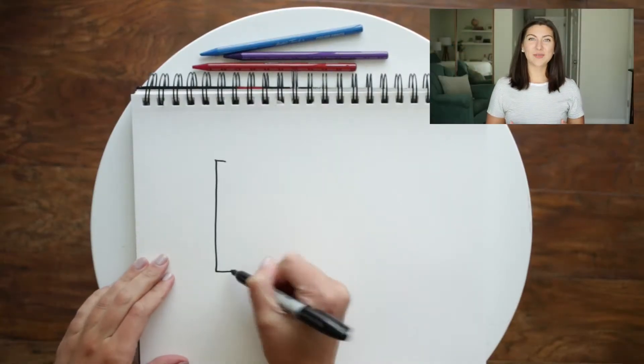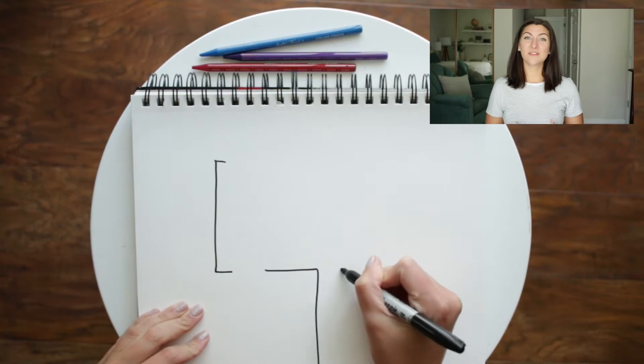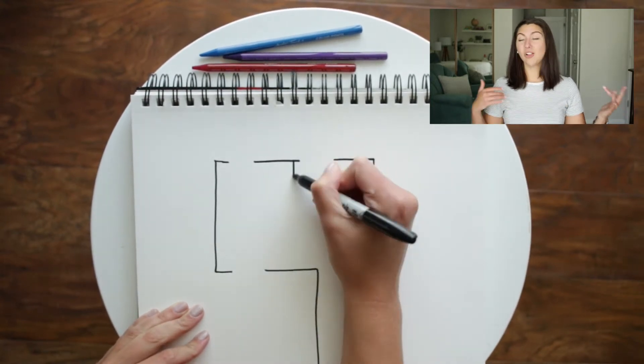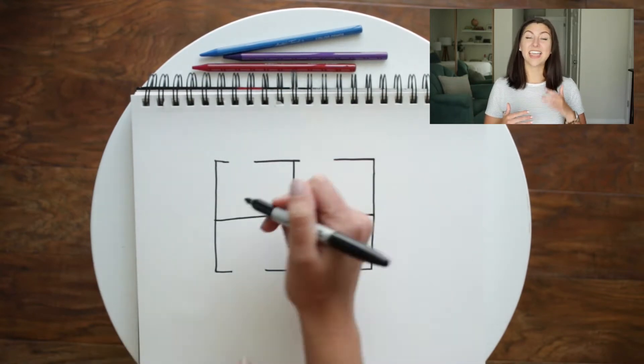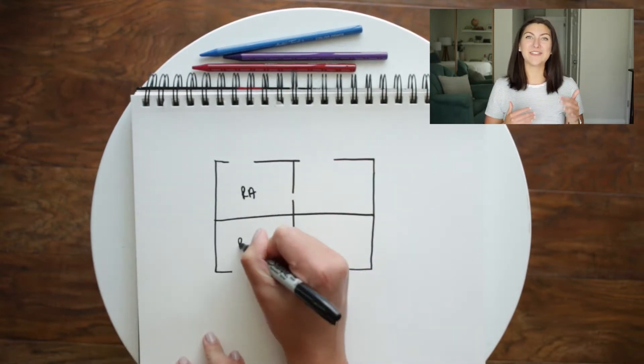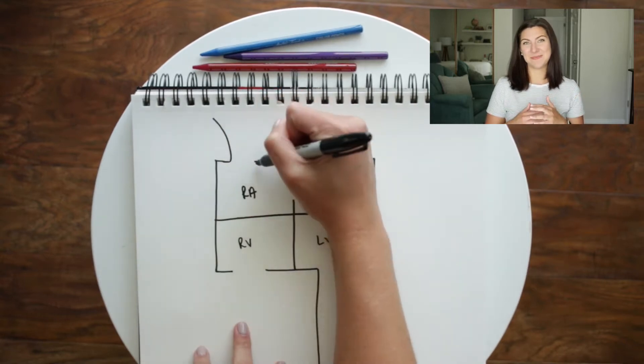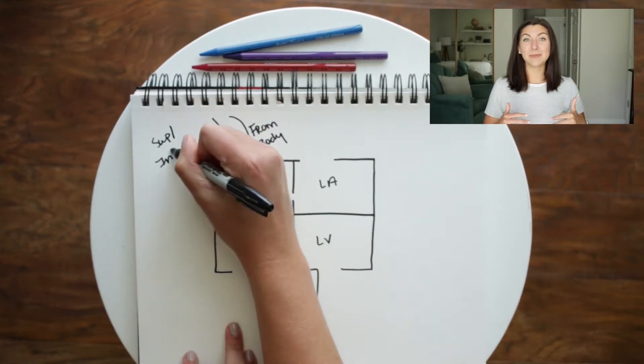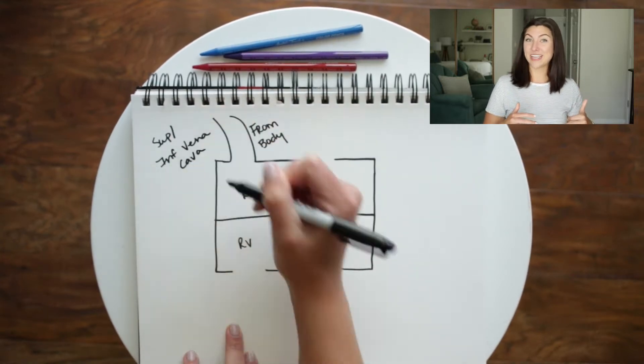Before we dig into this example, let's take a step back and look at this simplified heart to make sure we understand how blood normally flows through it. We start with four boxes representing the four chambers. Deoxygenated blood comes from all over the body into the heart via the inferior and superior vena cava, dumping into the right atrium. From the right atrium we go to the right ventricle, where the blood is then pumped via the pulmonary artery into the lungs.